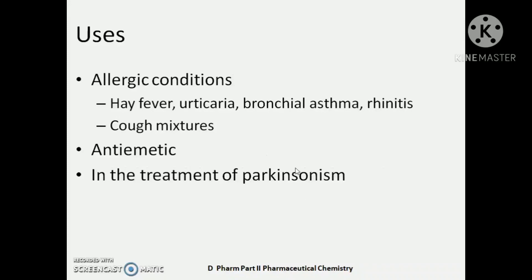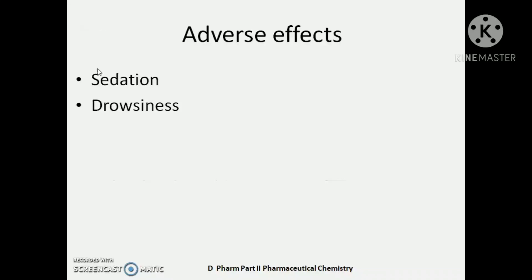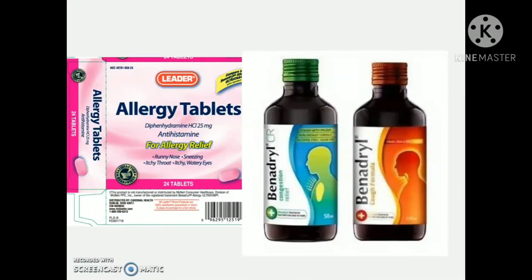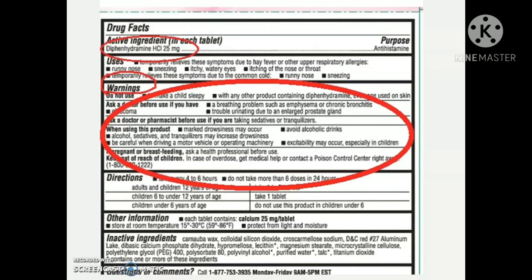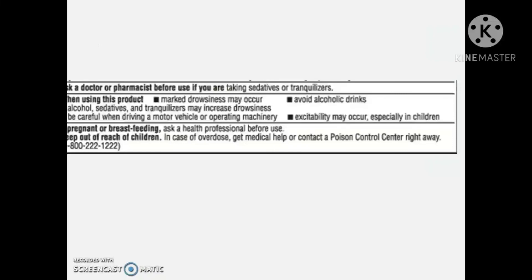Coming to the uses of diphenhydramine: it is an antihistaminic and H1 receptor antagonist, so it is used in the treatment of allergic conditions such as urticaria, bronchial asthma, rhinitis, pruritis, etc. It is a common ingredient in many cough mixtures and is also used as an anti-emetic to prevent vomiting. It can also be used to treat symptoms of Parkinsonism. The main disadvantage is that, being a first-generation antihistamin, it produces sedation and drowsiness. Drug labels containing diphenhydramine carry a warning to use with caution when driving or working with machinery. We will see other drugs in the next video. Thank you.